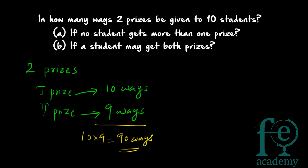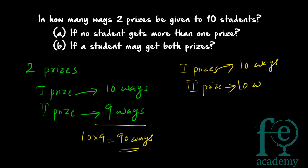The second case is that a student may get both prizes. There is no restriction — a student can receive both prizes. The first prize can be given in 10 ways. The second prize can also be given in 10 ways, since there is no condition preventing one student from receiving both prizes. So in total, 10 × 10 = 100 ways to distribute the prizes.